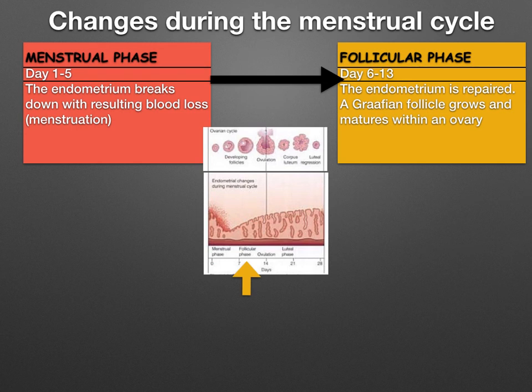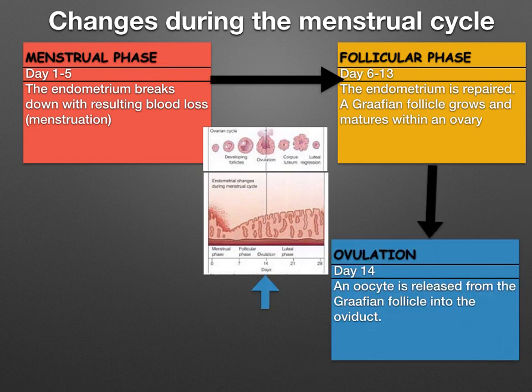The follicular phase is day six to day 13. This is when the endometrium is repaired and a Graafian follicle grows and matures within the ovary. Ovulation usually occurs on around day 14, when an oocyte is released from the Graafian follicle into the oviduct — it's sometimes referred to as the ovum.